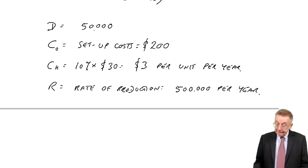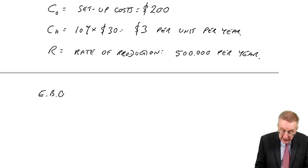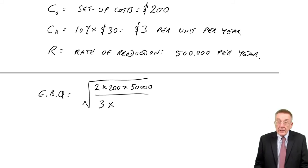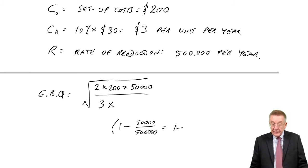And so, which is simply a question of being able to use a calculator. The economic batch quantity. The square root of 2, C0 is 200, D is 50,000, divided by CH, which is 3. Times, I'll work it out separately. 1 minus D, which is 50,000, over R, which is 500,000, which is 1 minus 50 over 500 is 0.1. It's 0.9.